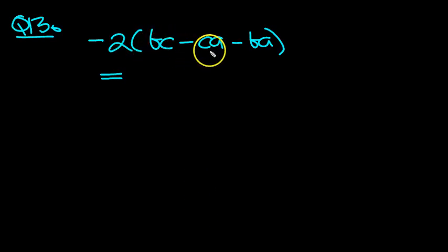Minus two lots of in the bracket BC minus CA minus BA, close bracket.